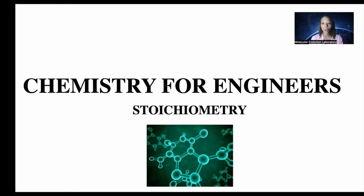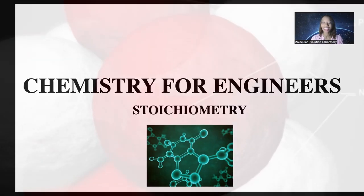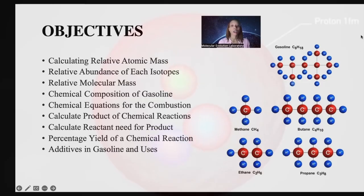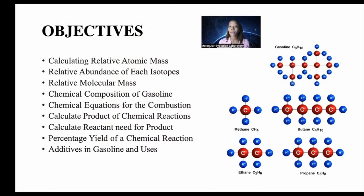Hello, welcome to lecture four of our lecture series, Chemistry for Engineers. Today our topic will be on stoichiometry. Our objectives for today will be calculating relative atomic mass and the relative abundance of each isotope, relative molecular mass, understanding the chemical composition of gasoline, which is basically simple — it's only hydrocarbons — understanding chemical equations for combustion to calculate products of chemical reactions as well as reactants needed for a product. Stoichiometry refers to a quantitative calculation for a chemical reaction, so you're basically just dealing with numbers and calculation.